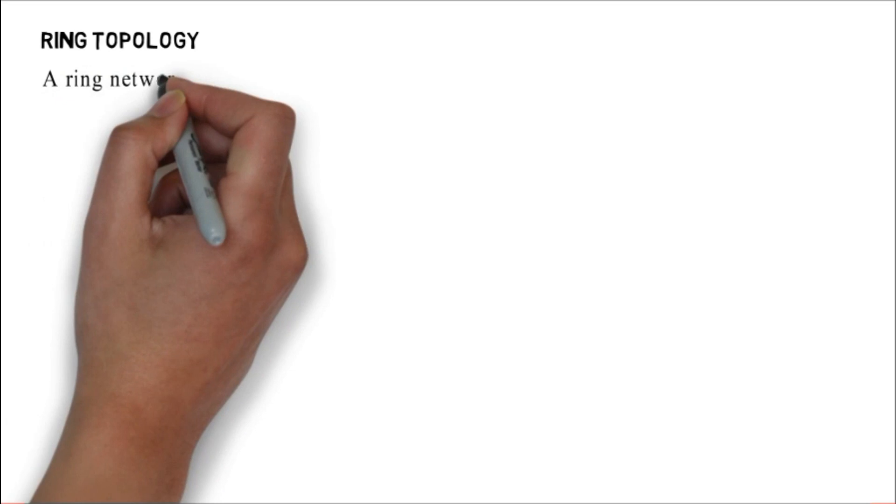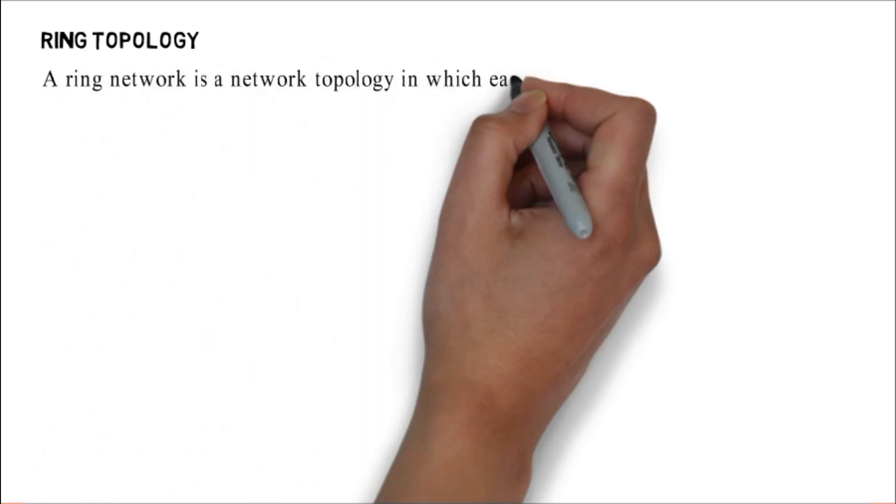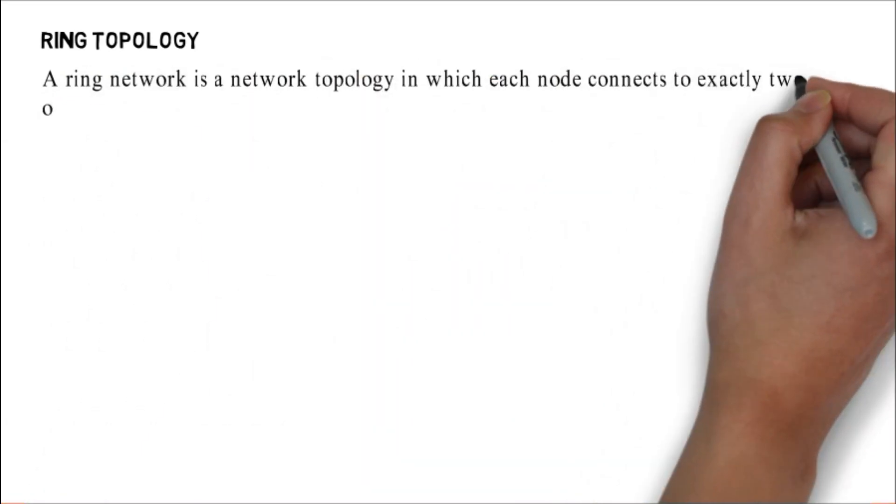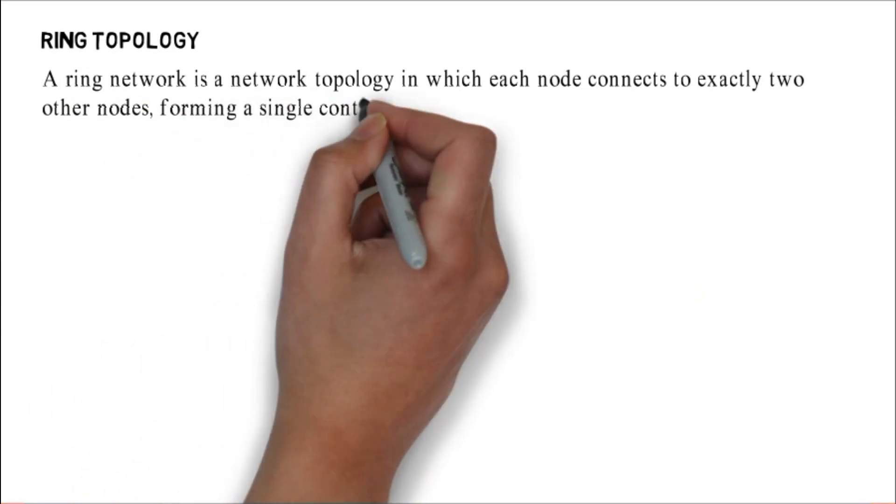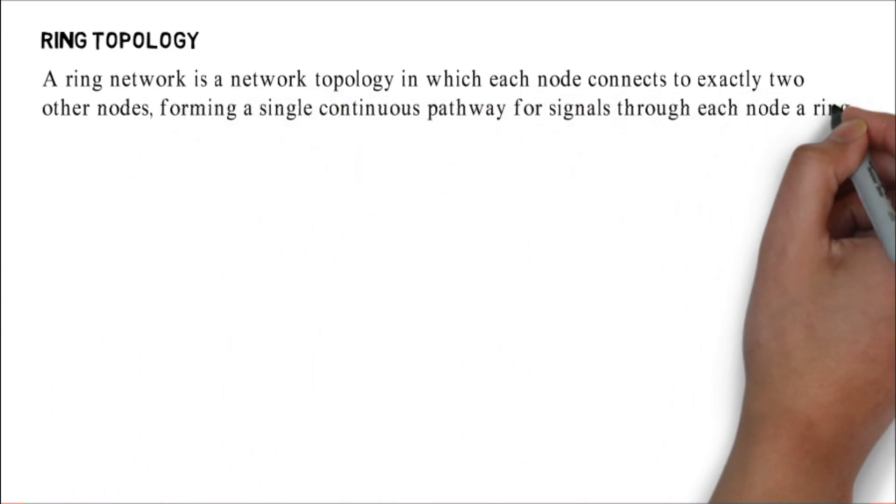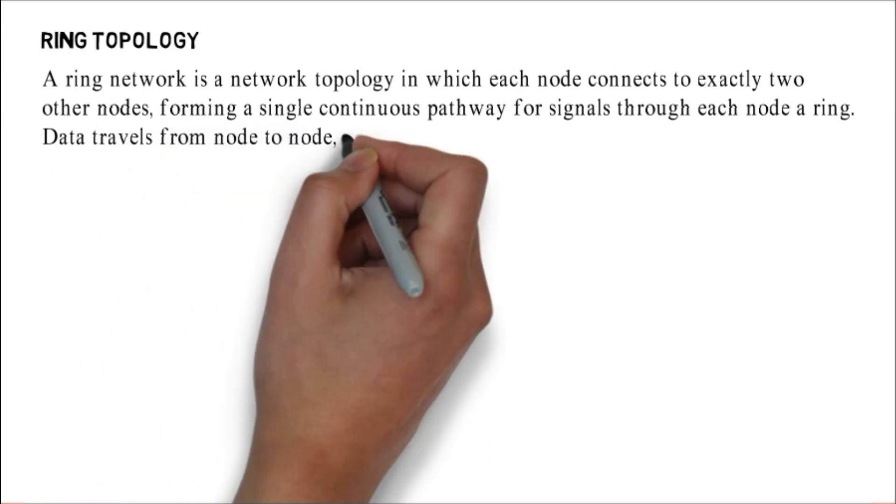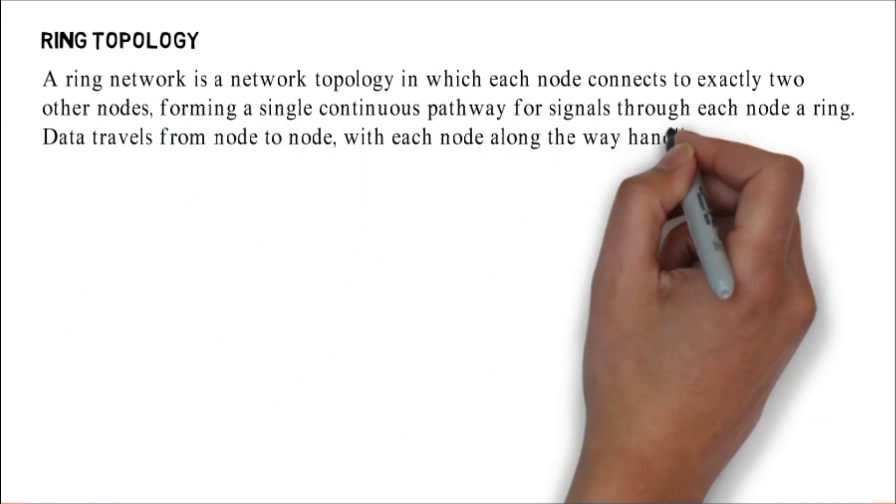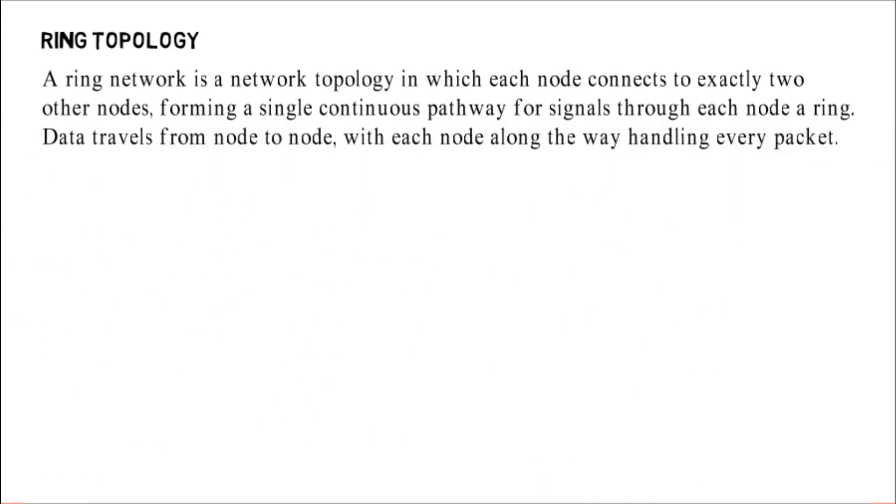Ring topology. A ring network is a network topology in which each node connects to exactly two other nodes, forming a single continuous pathway for signals through each node, a ring. Data travels from node to node, with each node along the way handling every packet.